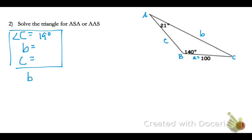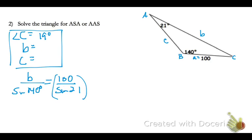Let's start alphabetically. B over the sine of angle B equals 100 over the sine of 21 — using the side length and angle we were given. Multiply both sides by the denominator on the left as usual. So 100 divided by the sine of 21, times the sine of 140. Rounding to the ones place, side B is 179.